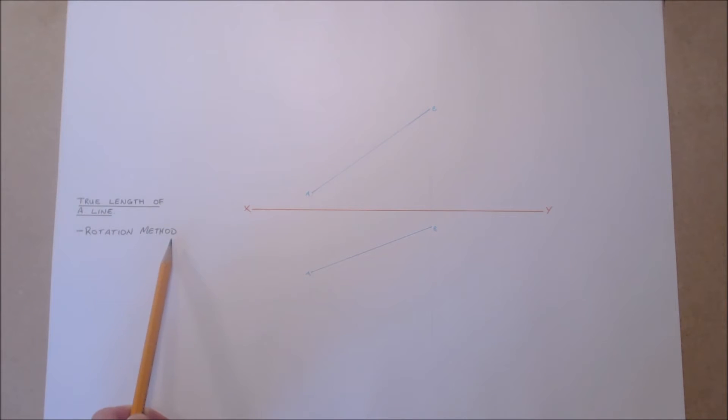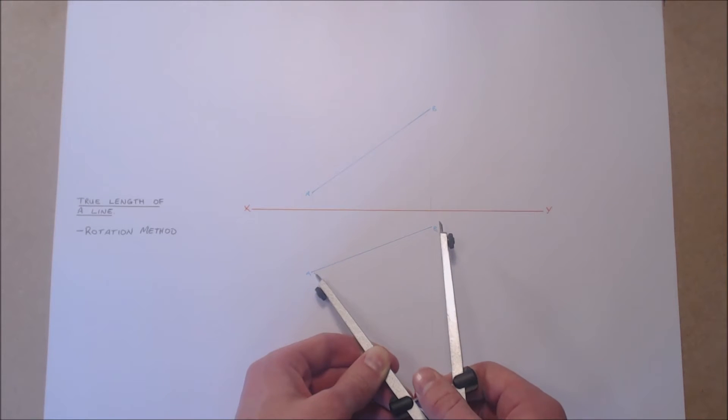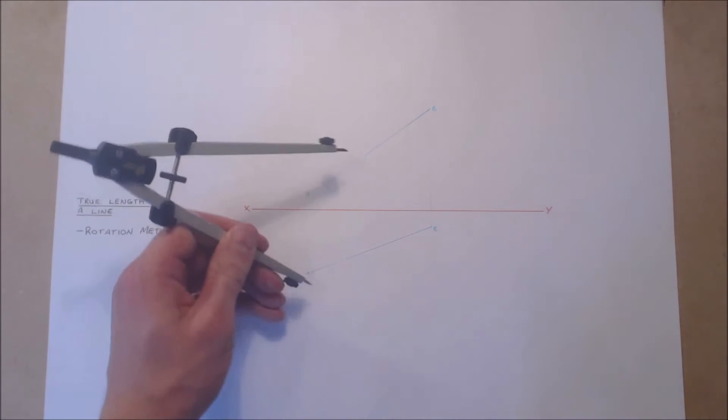Find the true length of the line AB using the rotation method. For the rotation method, we will rotate the line AB into a position so that it is parallel to the given projection plane, i.e., the XY line.